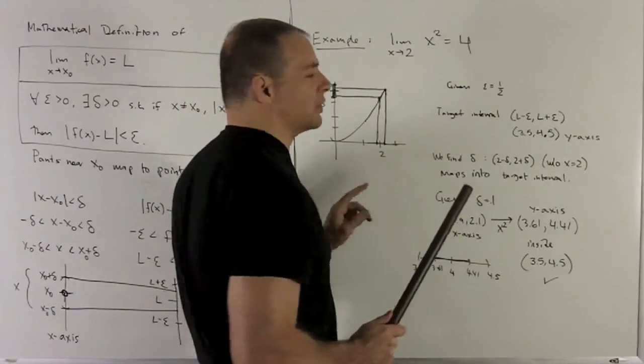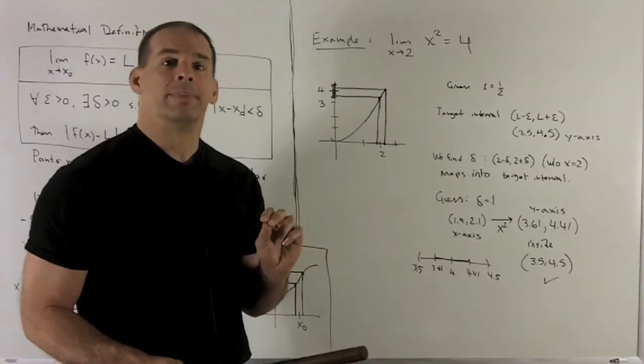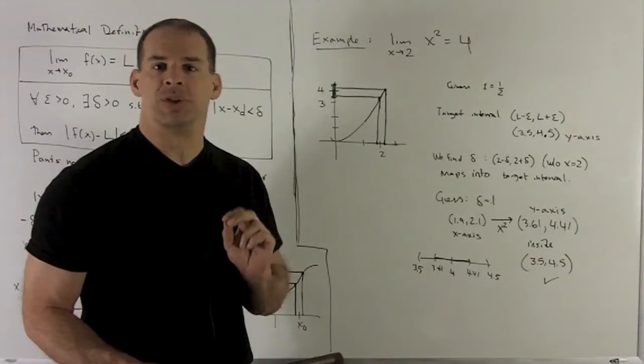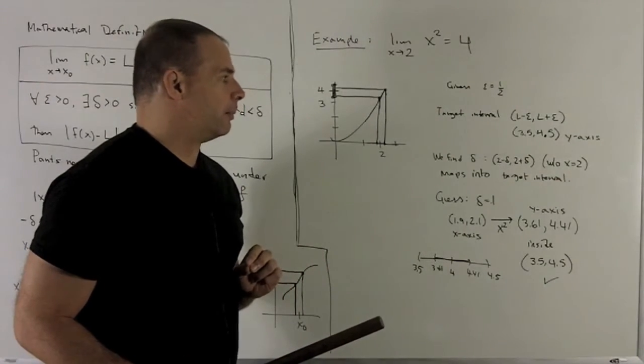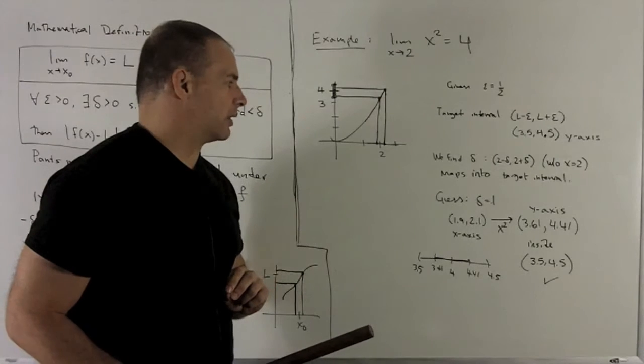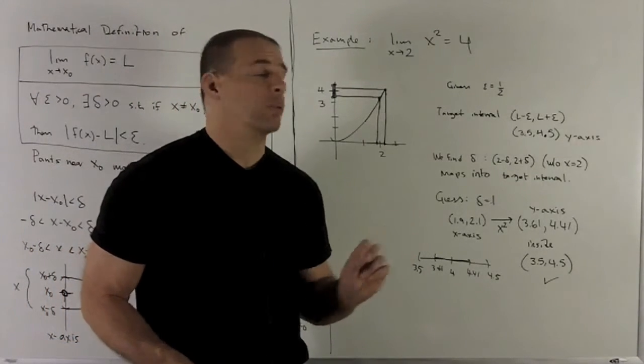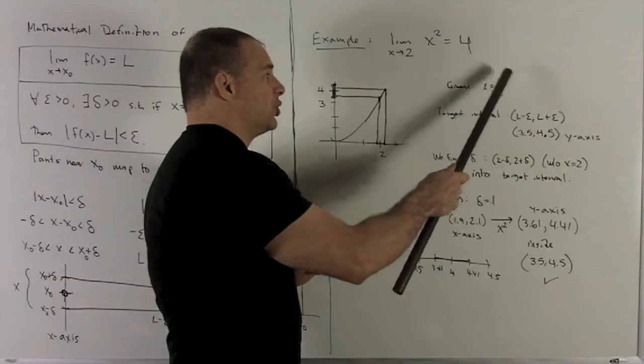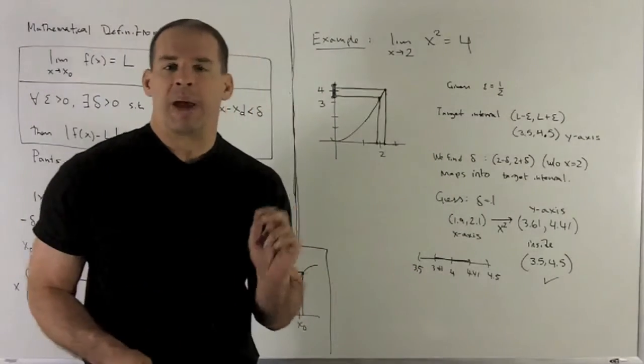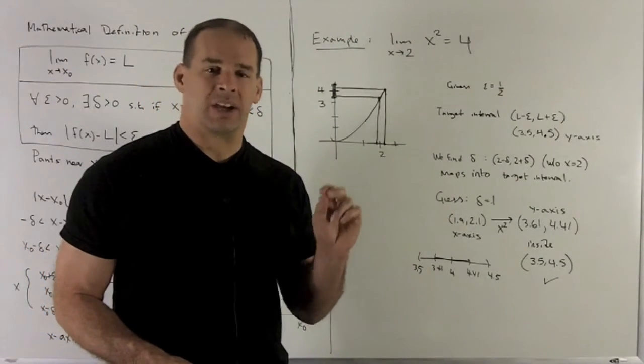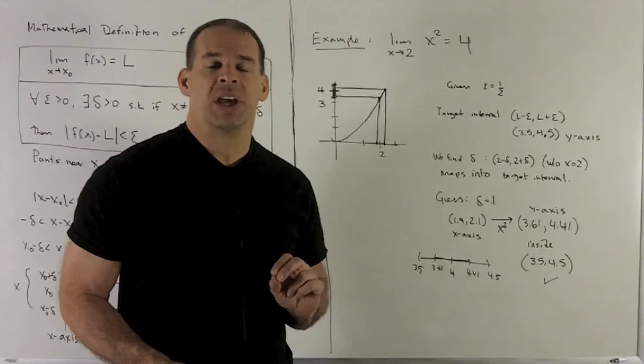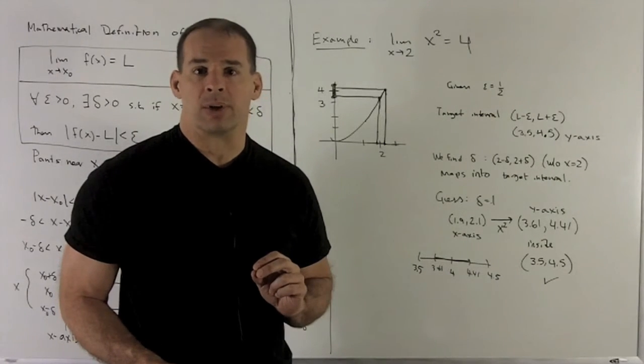And no, we don't care about x equal to 2. We could throw that away. In this case, it won't matter, but sometimes you do want to get rid of the actual point you're taking the limit at. So how do you do this? Well, when somebody actually hands you a number, your best bet is just to take a really small number, see if it works, and then keep going with smaller and smaller numbers until you get something.